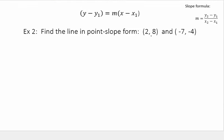Find the line in point-slope form. Again, here's your two points. x1, y1, x2, y2. And then find slope.